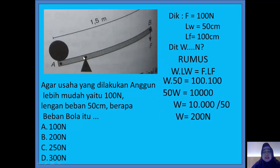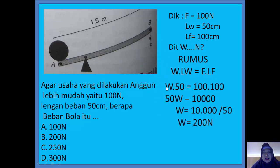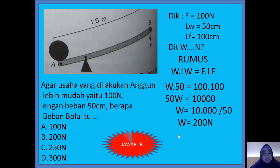Sekarang kita masukkan. W-nya dicari. 50 itu adalah LW. 100 Newton adalah kuasa F dikali 100 cm LF. Jadi 50W sama dengan 10.000. W berarti 10.000 dibagi 50, ketemunya 200 Newton. Jadi jawabannya adalah yang B.